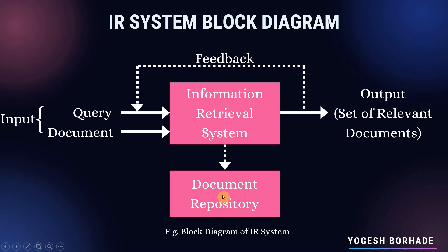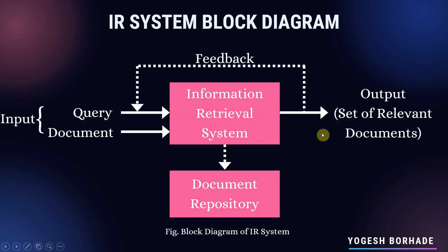While processing, the IRS will refer to the document repository. This document repository contains some pre-processed documents which help the processor to display the output. That output will be the set of relevant documents that the user is trying to find. The feedback component means the system accepts feedback from the user to check whether rectification of the working of the system is required or not.